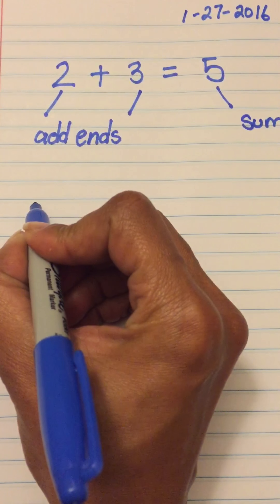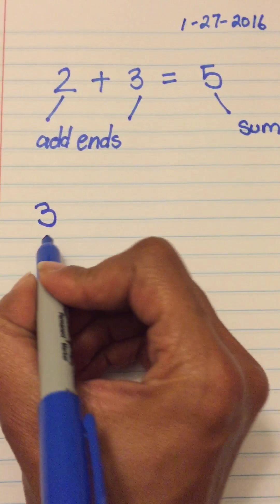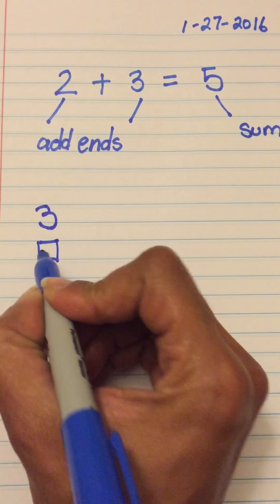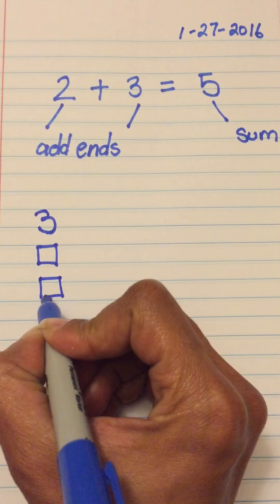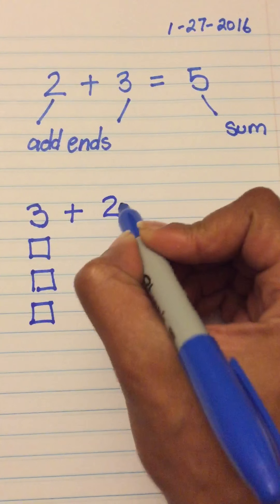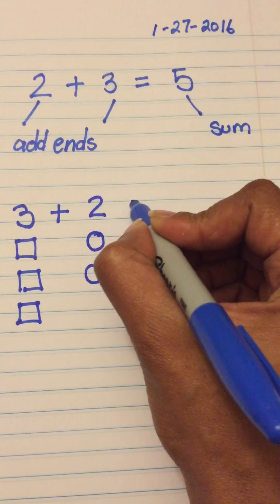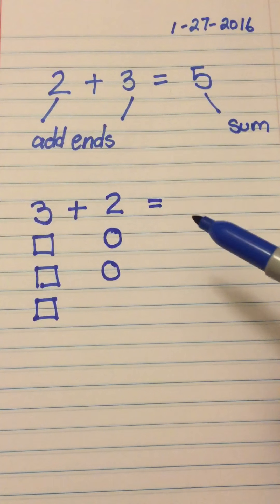Here is the first number. The first number is three. We are going to draw three squares. We are going to draw two circles. Equals how many?